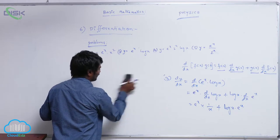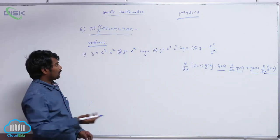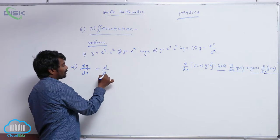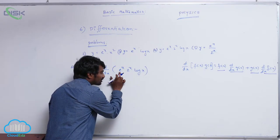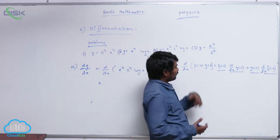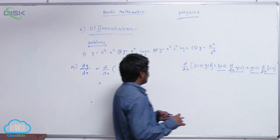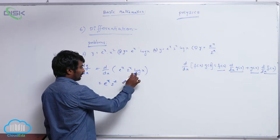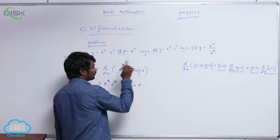In the fourth problem, three functions are multiplied — not two. dy by dx is equal to d by dx of e power x into 2 power x into log x, which is f of x into g of x into h of x. When two functions are multiplied we kept one undisturbed. With three functions, we keep two functions undisturbed and differentiate the third. So: keep e power x and 2 power x undisturbed, and differentiate log x.